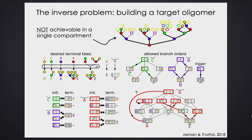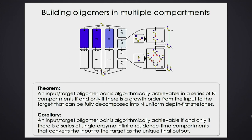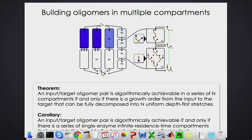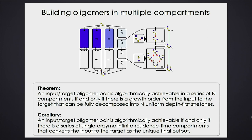There are classes of structures that cannot be made in a single reaction compartment, and the class of structures that can be made in multiple compartments is much much larger — that's what the eukaryotic cell makes use of, whereas bacteria have a single reaction compartment. Here's the theorem for multiple compartments: an input–target pair is algorithmically achievable in a series of n compartments if and only if there is a growth order from the input to the target that can be fully decomposed into n stretches of the appropriate type.